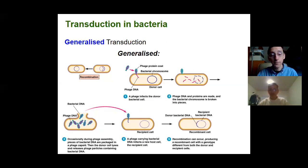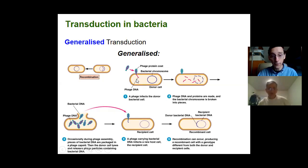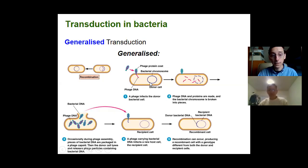When bacterial viruses infect a cell, they bind to the cell and then inject their DNA into the cell. They use the cell to replicate their DNA. One of the first things the viral genome does is code for an enzyme that degrades the bacterial DNA — so your genome is calling the shots in the cell, not the host genome.